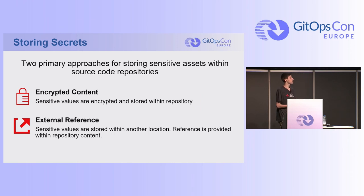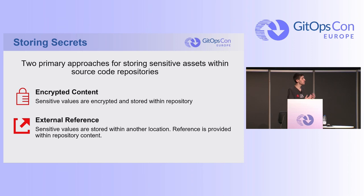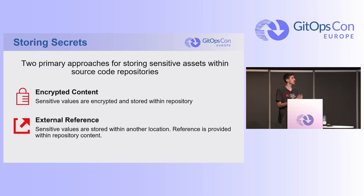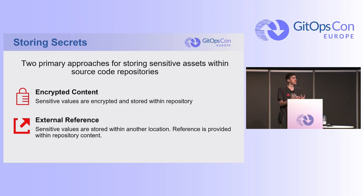When you're storing secrets, there are two primary ways to put those into your Git repository. One, you will encrypt the values — use some tool, encrypt them, and store the encrypted values inside your Git repository. The second is to use an external reference: store sensitive resources somewhere else, but put a pointer inside your Git repository so that when you're reconciling state, some other tool can reach out to an external system and find it at runtime.